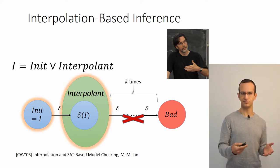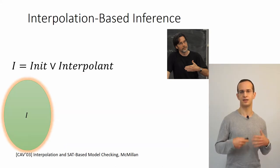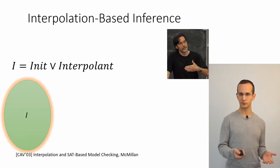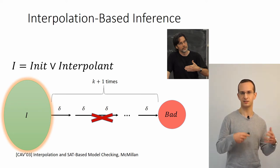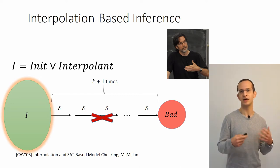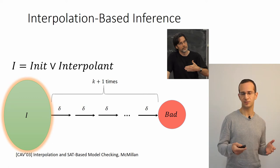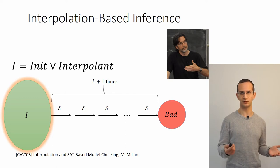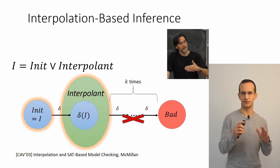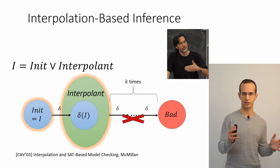Taking this interpolant and adding it to the invariant to obtain a new candidate, the process repeats: we do bounded model checking of k+1 steps, take the post image, try to over-approximate it, adding this to the invariant and so on. Unless it so happens that we can reach a bad state in k+1 steps—a failure of the algorithm—in which case it needs to be restarted with a larger bound k.